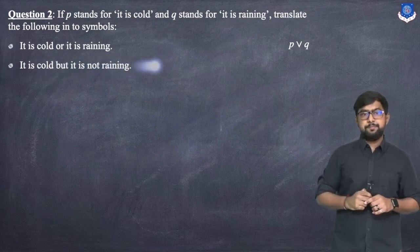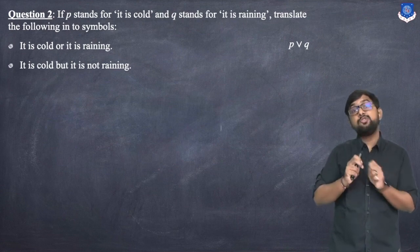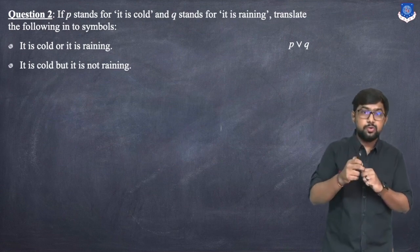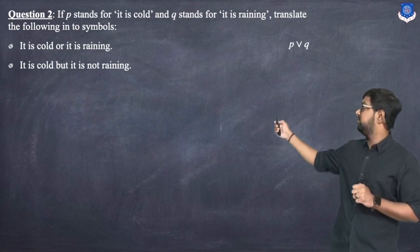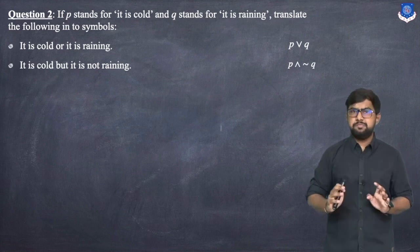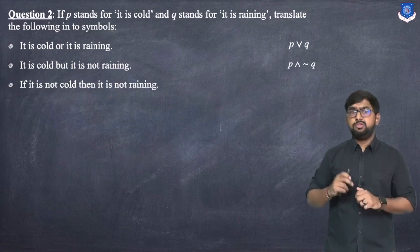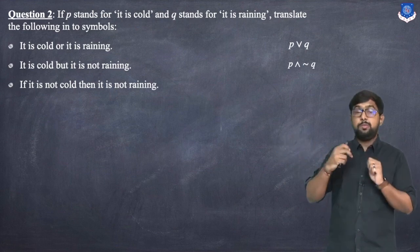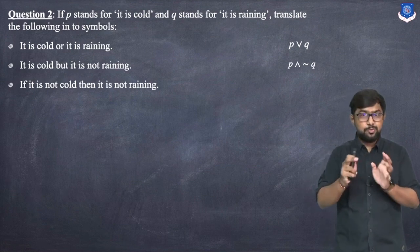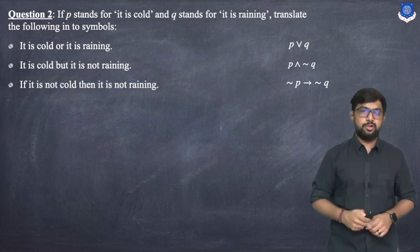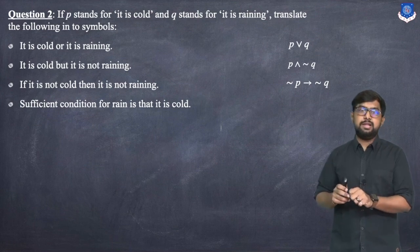Second: 'It is cold but it is not raining.' P = cold, 'but' stands for AND, and 'not raining' = ¬Q, so the form is P ∧ ¬Q. Third: 'If it is not cold then it is not raining.' Not cold = ¬P, not raining = ¬Q, so the form is ¬P → ¬Q.